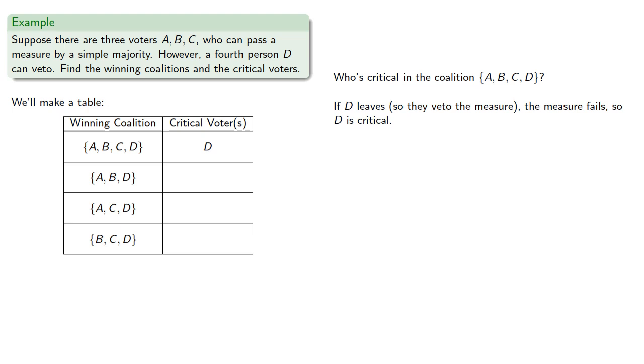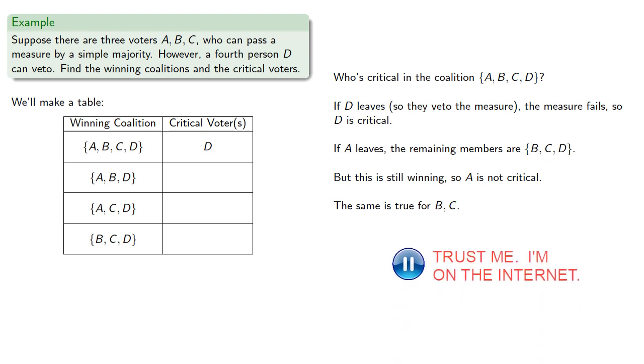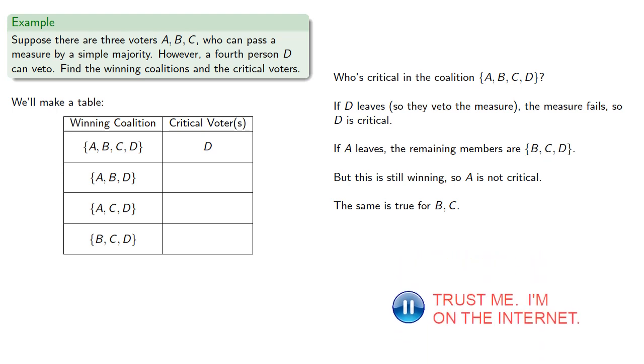If A leaves, the remaining members are B, C, and D. We see this is still winning, so A is not critical. The same is true for B and C. So the only critical voter is D.